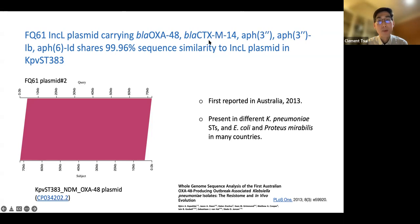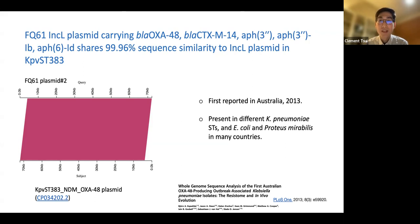This OXA-48-carrying plasmid was first reported in Australia around 2013. When we did a BLAST search there were multiple hits, and this plasmid has been carried by different sequence types of Klebsiella pneumoniae, E. coli, and Proteus. It has been widely circulating in different countries since around 2013.